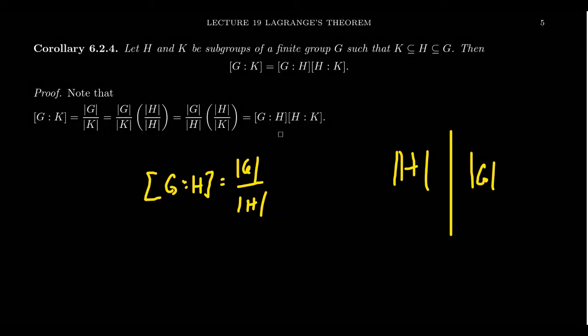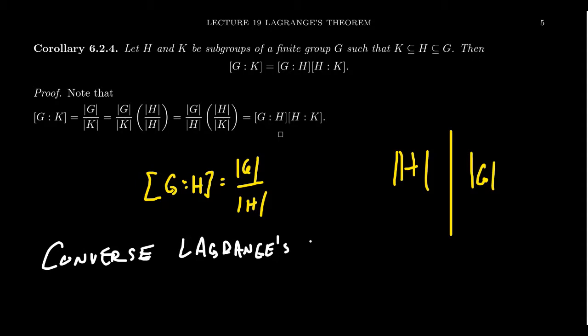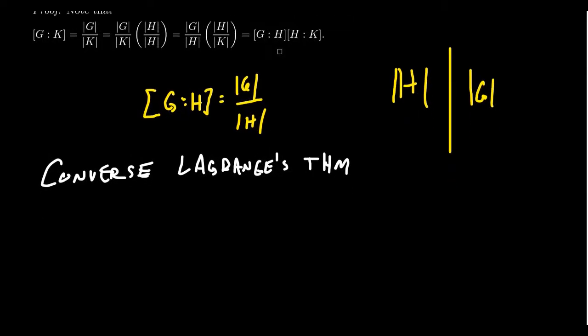Before ending this video, I want to make one comment about the converse of Lagrange's Theorem. Lagrange's Theorem says the order of a subgroup must divide the order of G — that is, the order of a subgroup is a divisor of |G|. The converse would ask: does every divisor of |G| have a corresponding subgroup of that size? We saw that for cyclic groups that is true — there's a subgroup for every divisor of the order of a cyclic group. But that's not true in general.